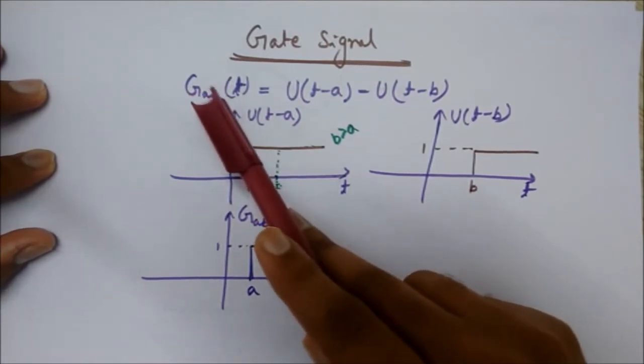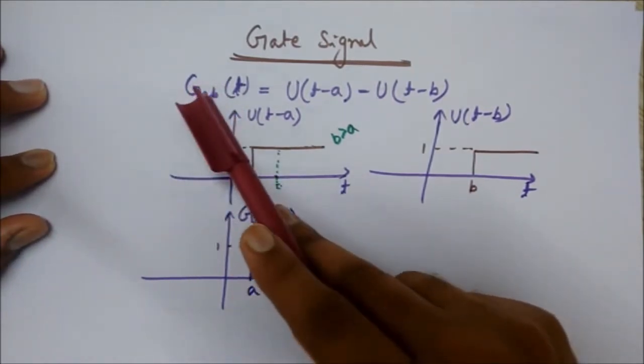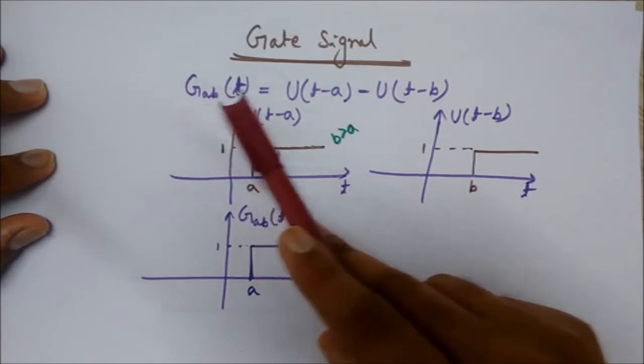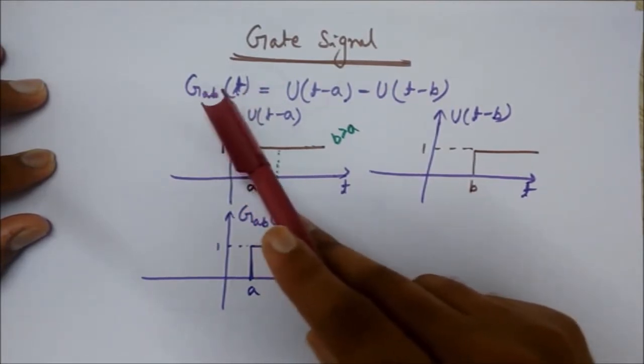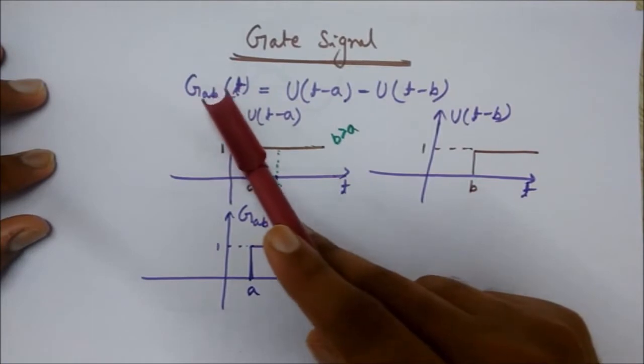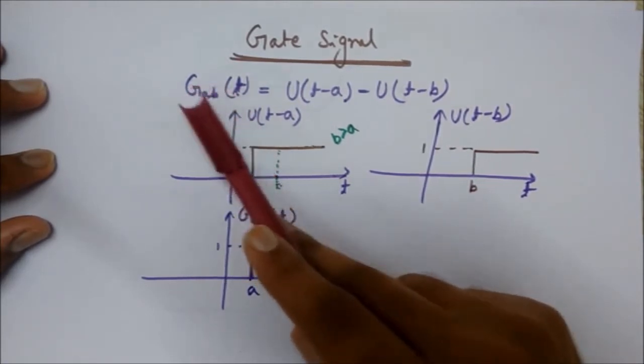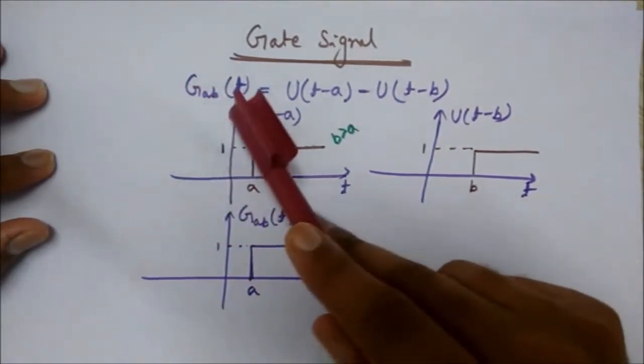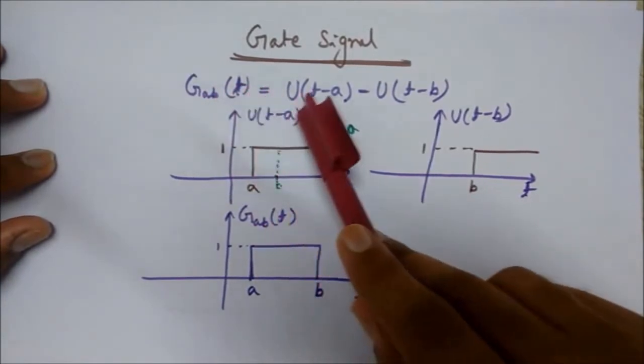A and b represent the interval of this gate signal. These a and b are constants on the time axis. This defines the interval between a and b, so G(t) equals U(t-a)...